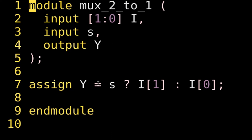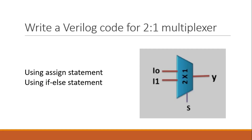The second question — implementing the 2-to-1 multiplexer using an if-else statement — I am not going to write the Verilog code here. I am expecting all of you who know Verilog coding to please write down the answer in the comment section.